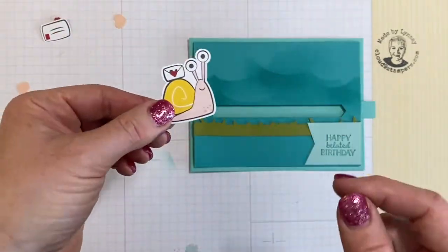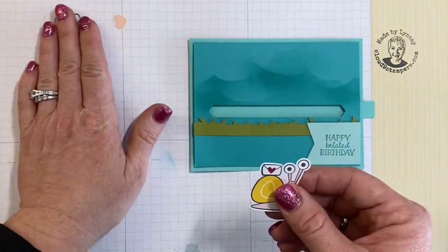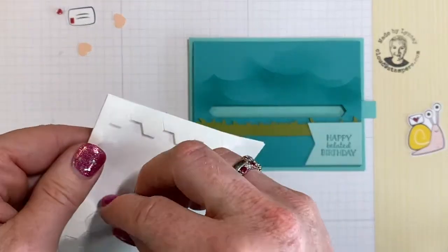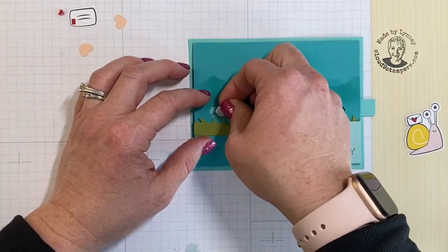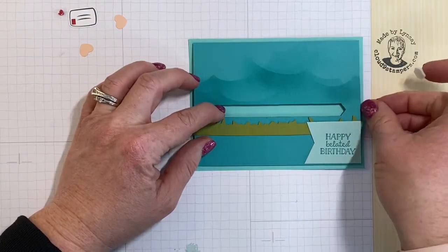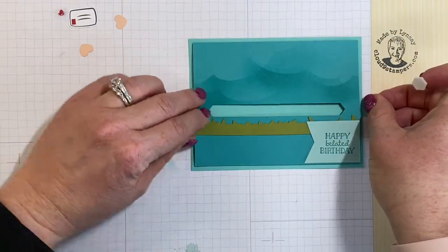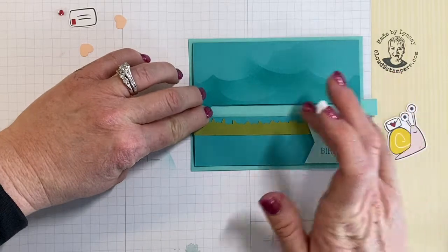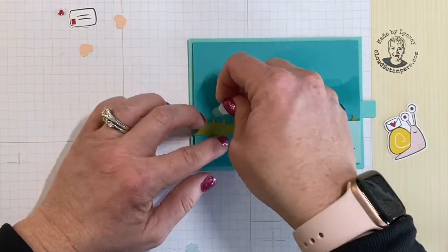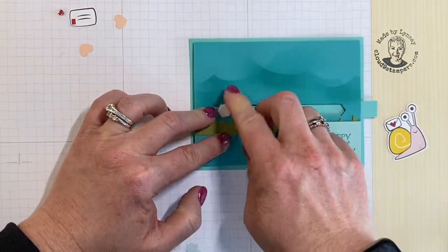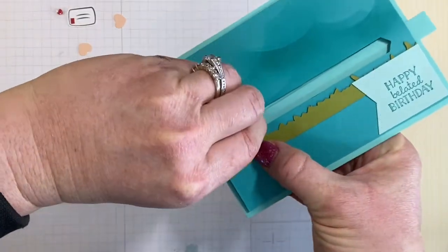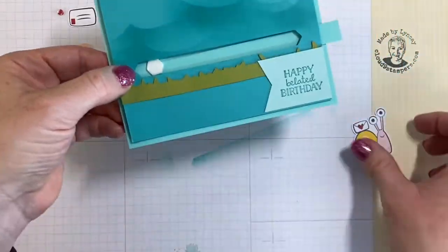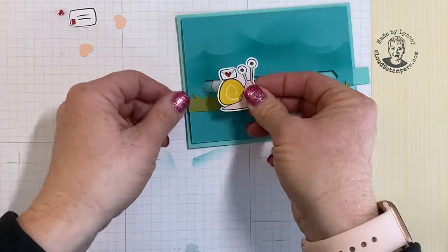This is where you're going to bring in your little snail. This is from the Snail Mail designer series paper. Next you're going to bring in a dimensional and you're going to stick it right into the channel. This is just kind of tricky because you want to make sure you're getting the strip and not the card front, so we're just going to place that in like so.